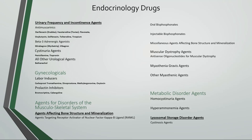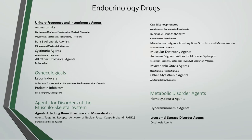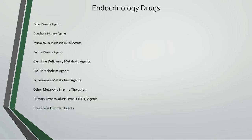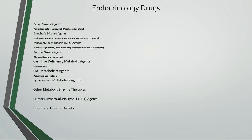For urologicals, there are benign prostatic hypertrophy agents including 5-alpha reductase inhibitors and alpha blockers. Sexual dysfunction agents include erectile dysfunction agents including phosphodiesterase inhibitors for ED. Hypoactive sexual desire disorder agents include melanocortin receptor agonists and multifunctional serotonin agonist-antagonists for HSDD. There are also urinary analgesics, urinary anti-infectives and antiseptics including urinary antibiotics. Urinary frequency and incontinence agents include anti-muscarinics and beta-3 adrenergic agonists. Agents for disorders of the musculoskeletal system include agents affecting bone structure and mineralization such as agents targeting RANK ligand, oral bisphosphonates, injectable bisphosphonates, and miscellaneous bone agents, as well as muscular dystrophy agents, myasthenia gravis agents, and metabolic disorder agents.